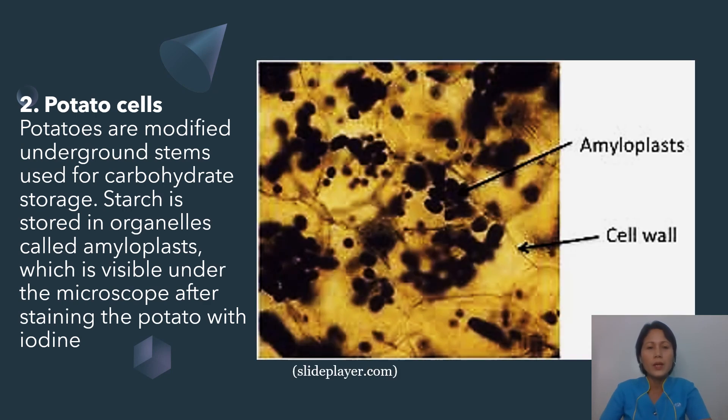Another example of plant cells are the potato cells. Potatoes are modified underground stems used for carbohydrate storage. Starch is stored in organelles called amyloplast, which is visible under microscope after staining the potato with iodine, just like what is being shown in this figure.